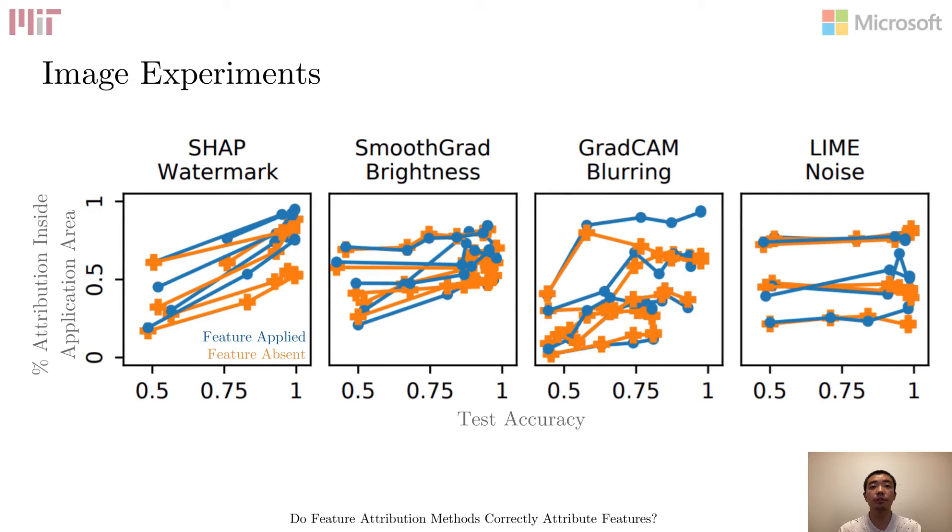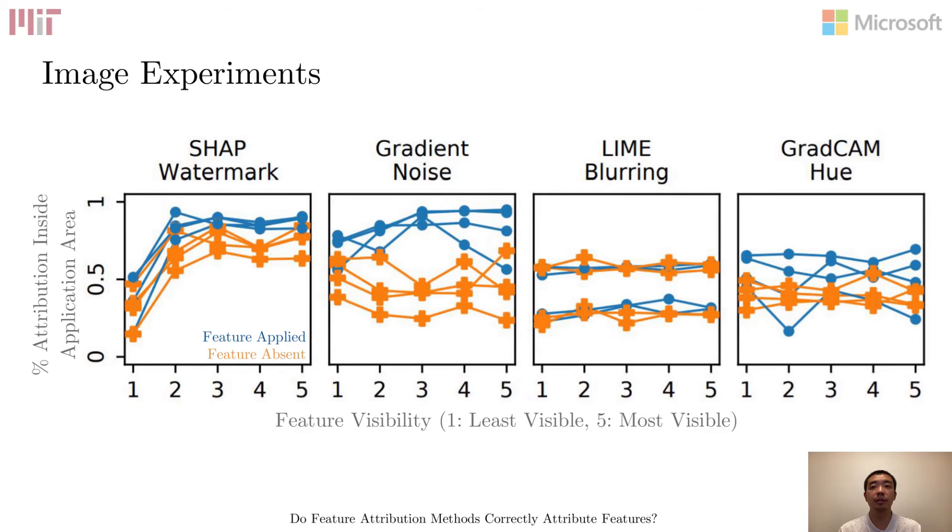We conducted additional studies that exhibit other failure modes of these explanations. For example, some of them could not recognize the model's increasing usage of correlated features during the training process as the test accuracy increases. They could not consistently recognize small and non-obvious features either, further casting doubt on their intended use of helping developers find subtle yet important visual cues.